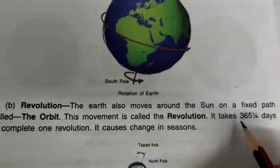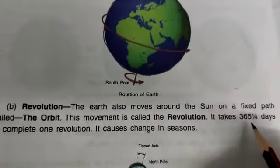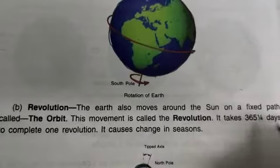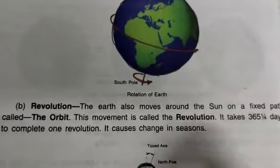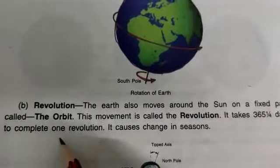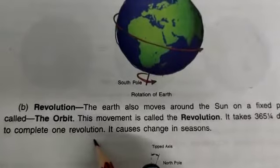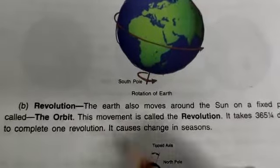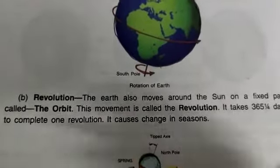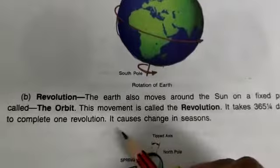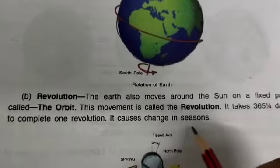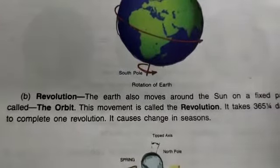The Earth takes 365 days to complete one revolution. This revolution causes a change in the seasons.